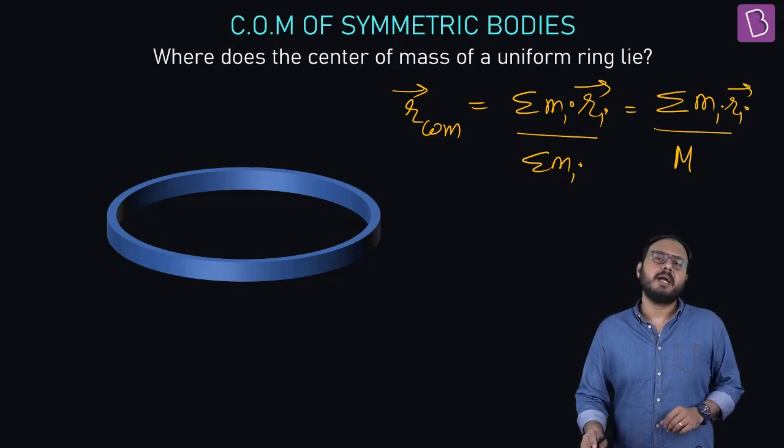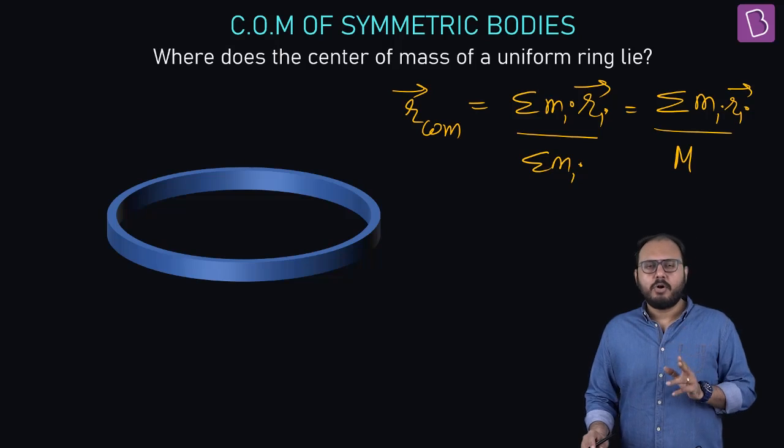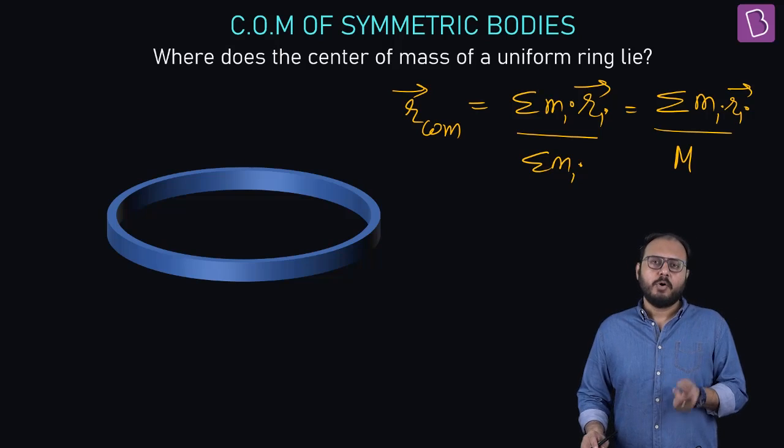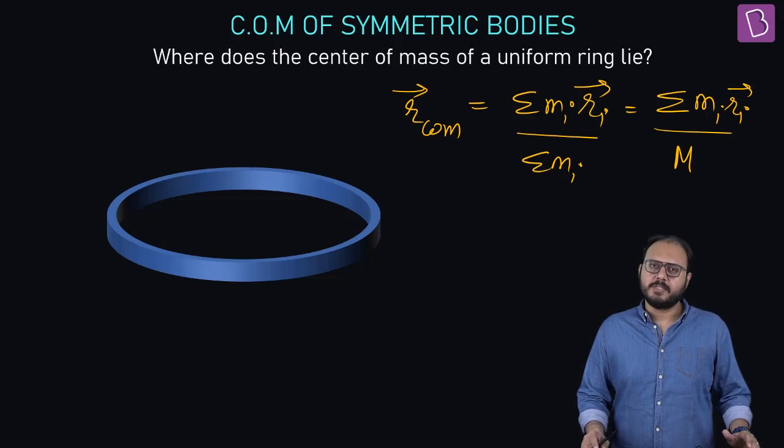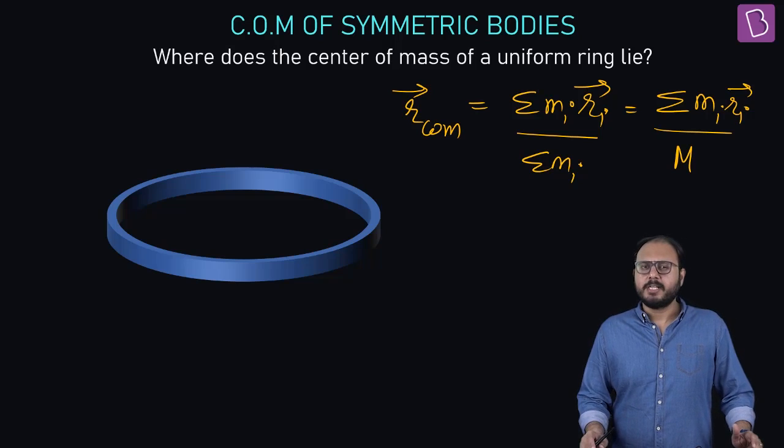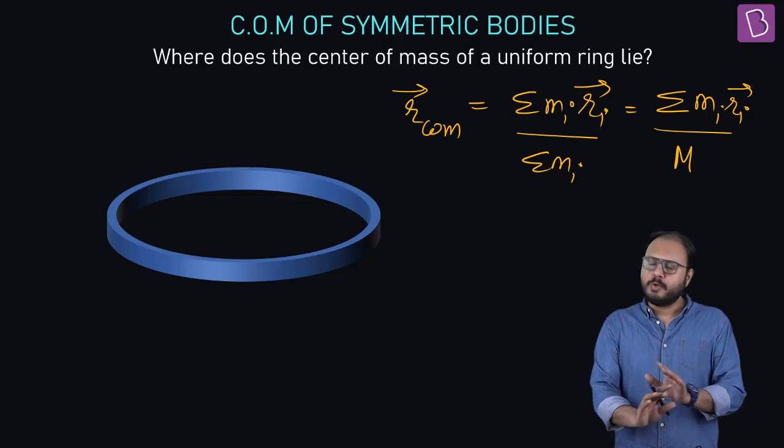Today, since we started the idea of center of mass, I will not go into the math of continuous bodies. But you know what it is. Sigma is for discrete. How do you add continuous bodies? Integration. But today, no.